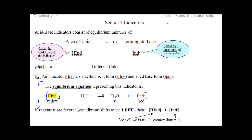Hey everyone, Section 4.17. We are almost done. We are going to be talking about indicators. We've used them a couple times in the titrations that we've done. Indicators basically change color at a certain range, and there are a lot of different types. I'm going to give you just an introduction to them in this video, then we'll go into more detail in class tomorrow and in groups.